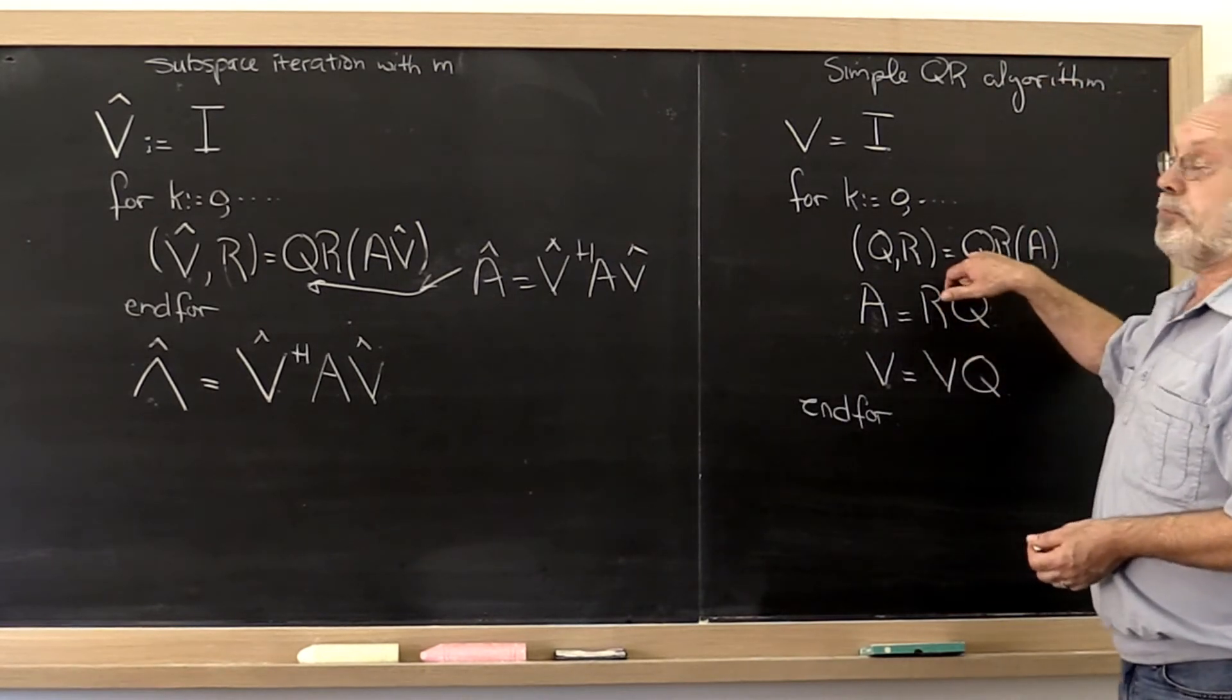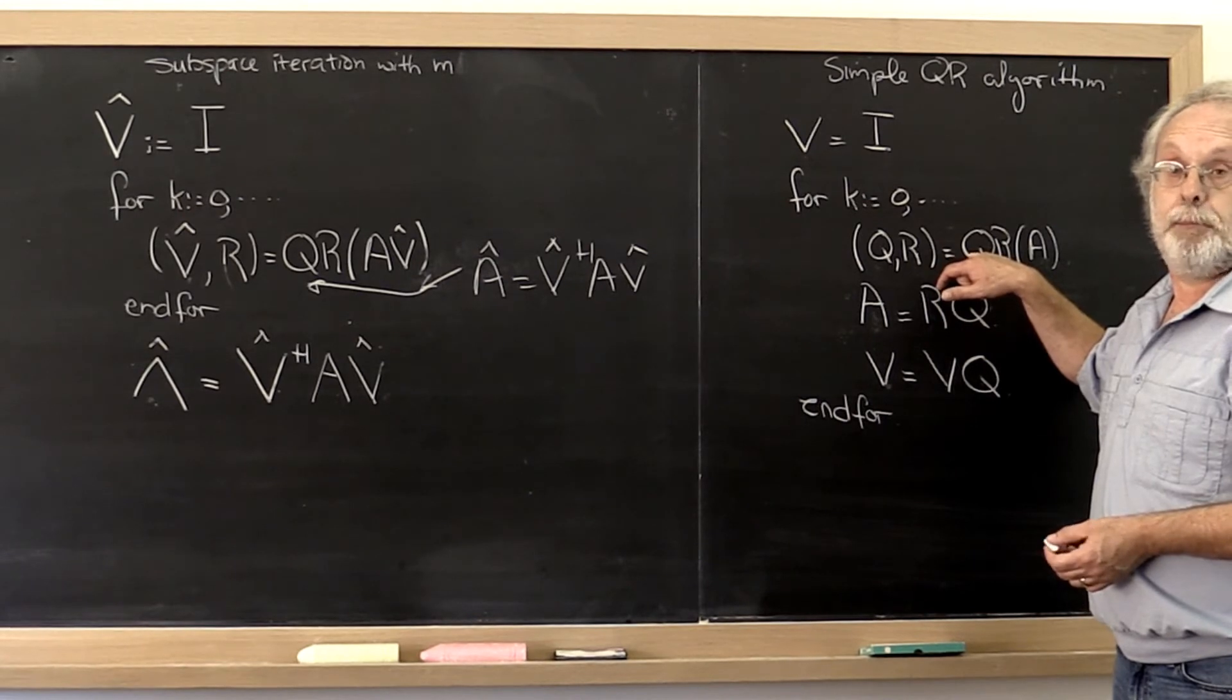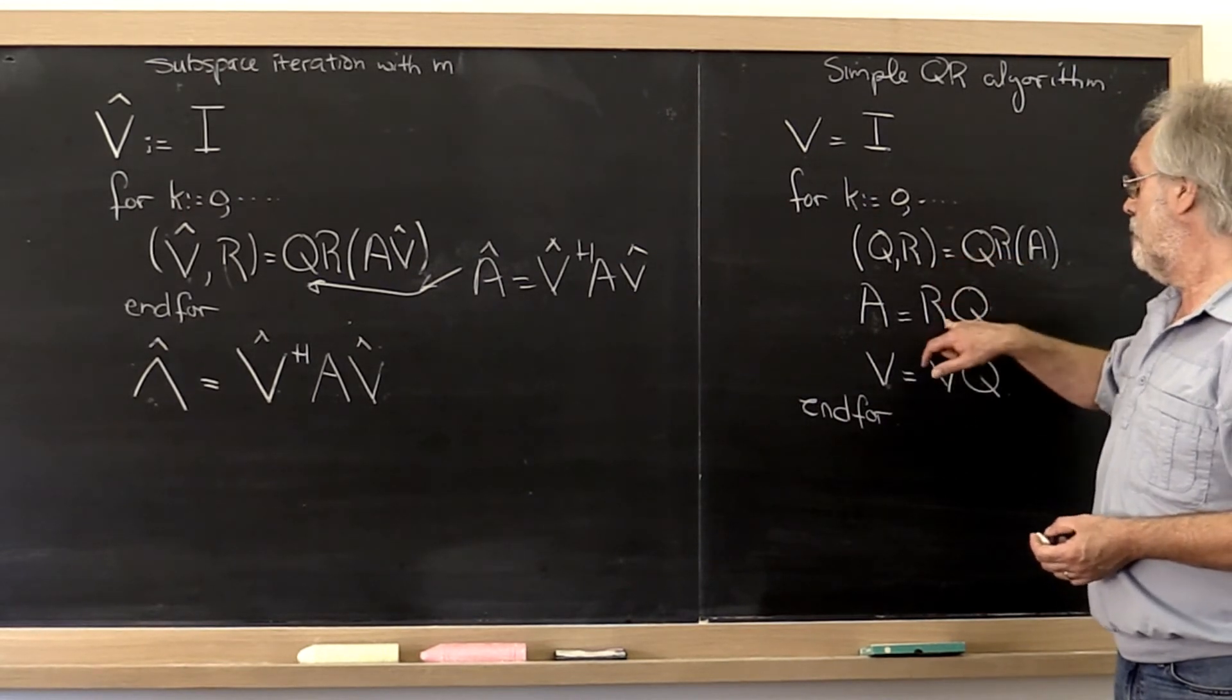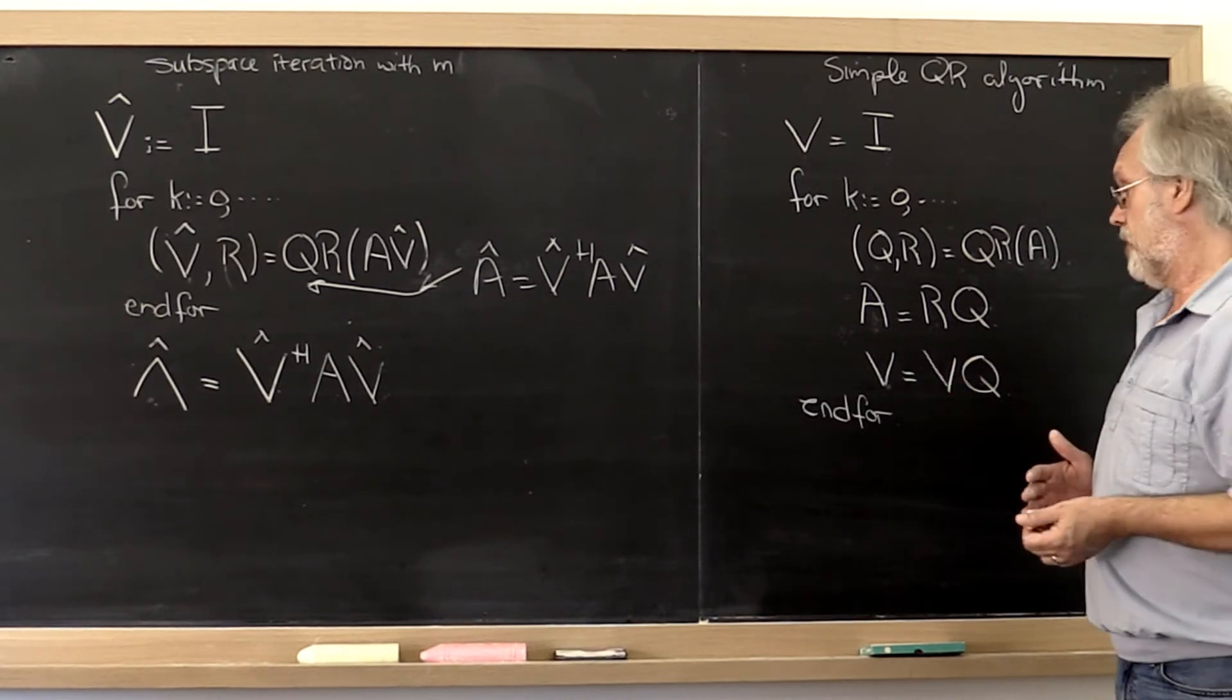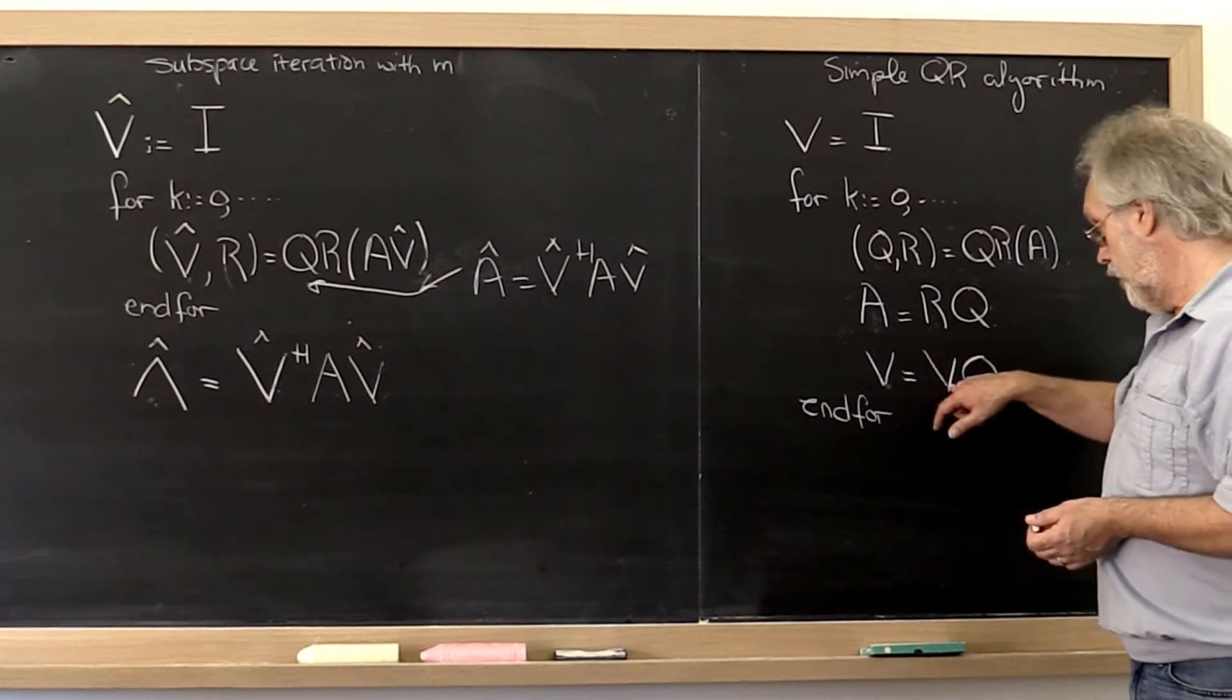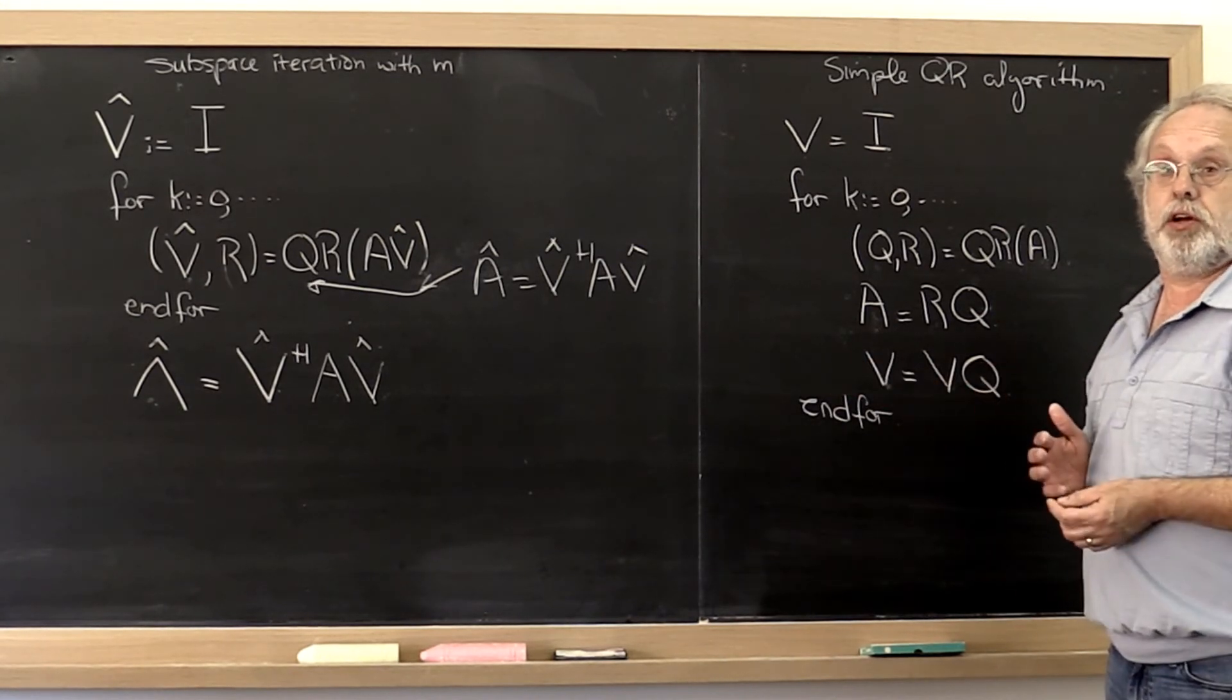Also, we know that performing a QR factorization requires order M cubed computation. And then multiplying R times Q requires another order M cubed computation. And then accumulating all of these requires yet another order M cubed computation.